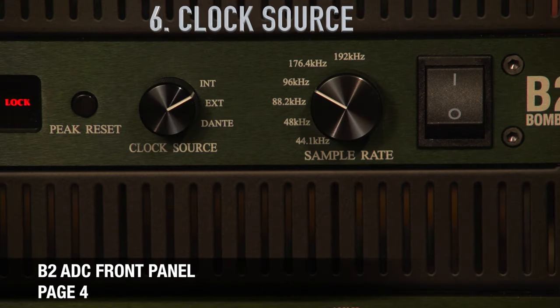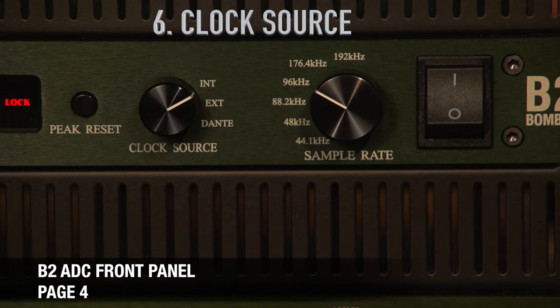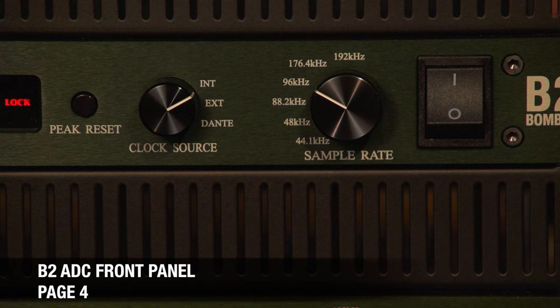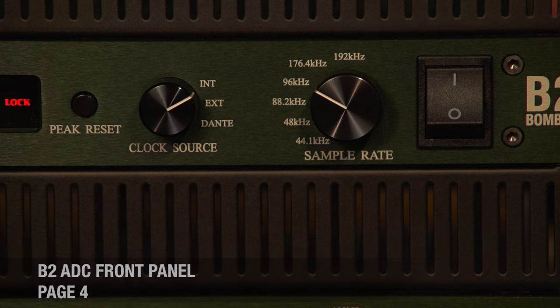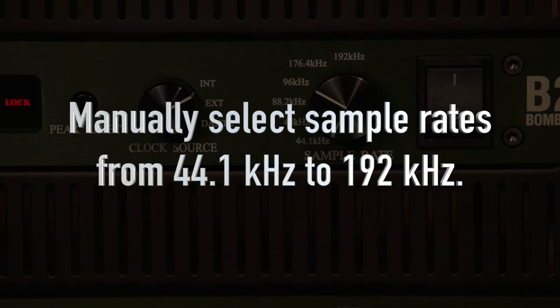Next we have clock source, which can select internal clock, external clock, or Dante. And finally we have sample rate select, which is for internal clock only. You can manually select sample rates from 44.1 all the way to 192.